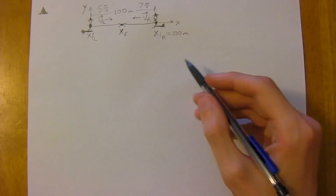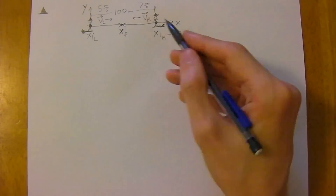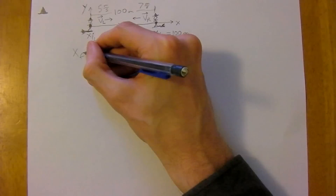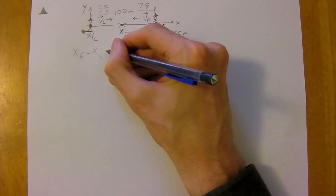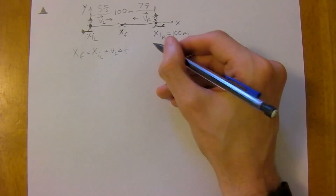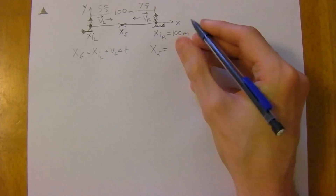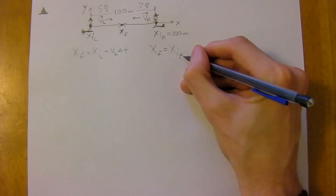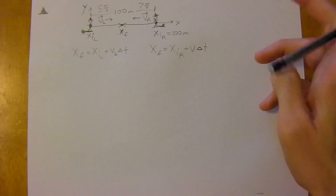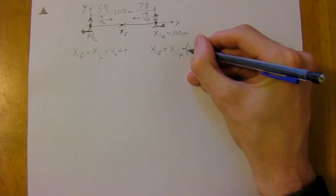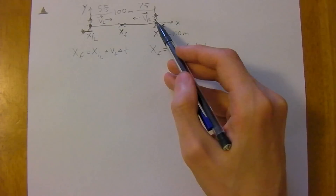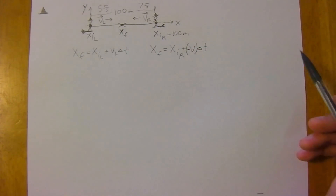We use the same equation derived in the previous video to write equations for both wizards. For the left wizard: x_final = x_initial_left + v_left × Δt. For the right wizard: x_final = x_initial_right + v_right × Δt. Importantly, the right wizard's velocity is negative, because by convention rightward is positive and leftward is negative on the x-axis.